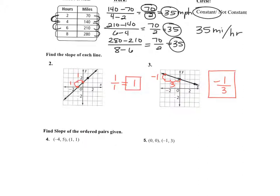The rule is you always start from the furthest left point that you can. You always want to go left to right. Think of it like reading — we always read left to right. You always do graphs left to right when you're finding slope.